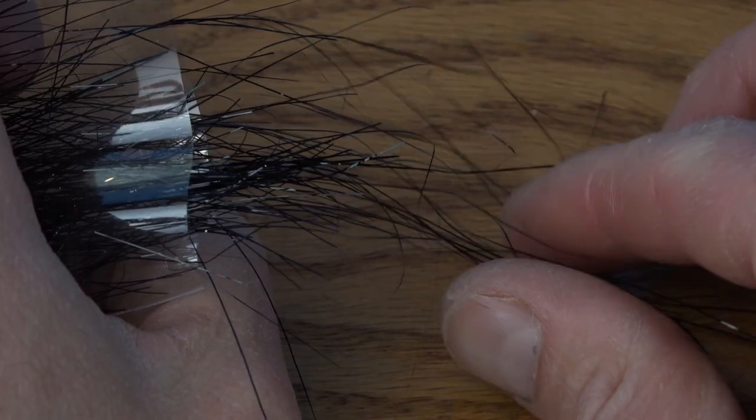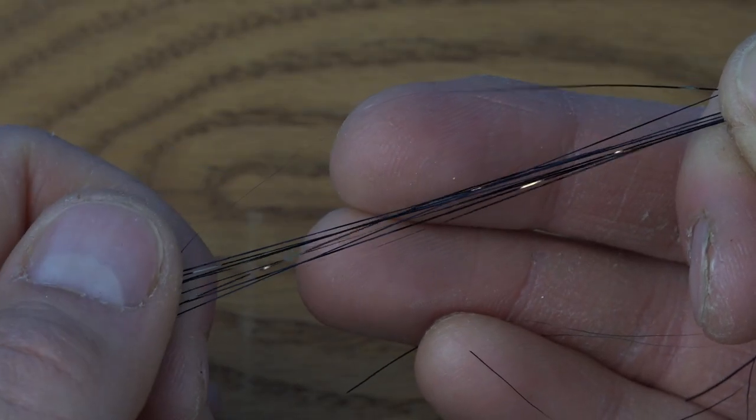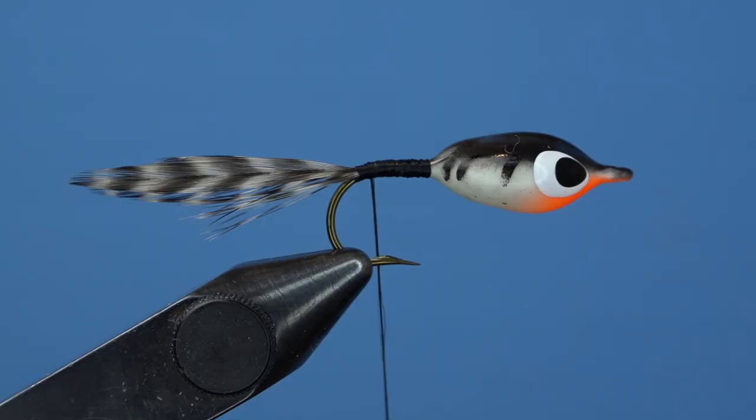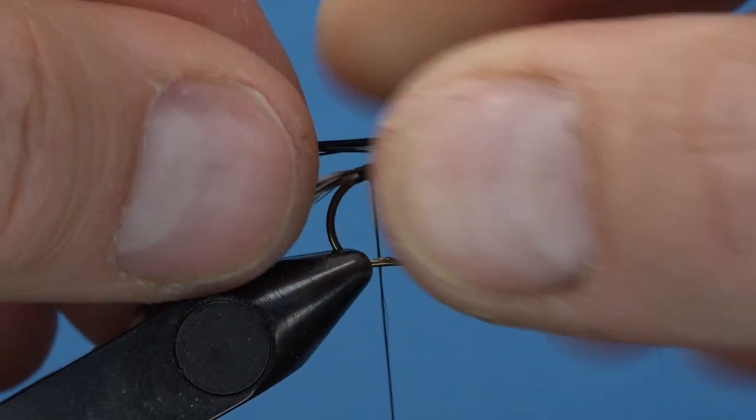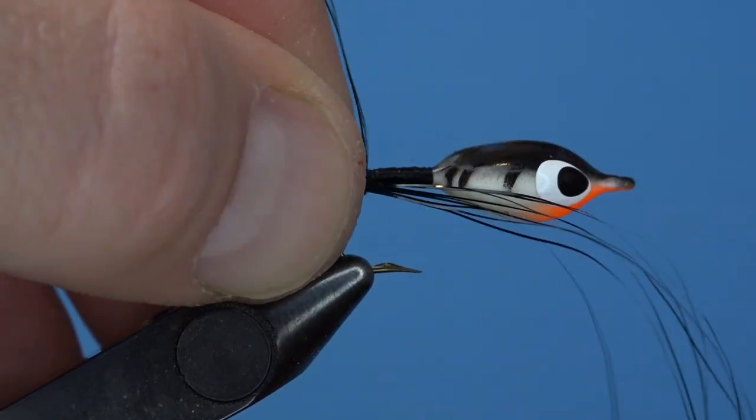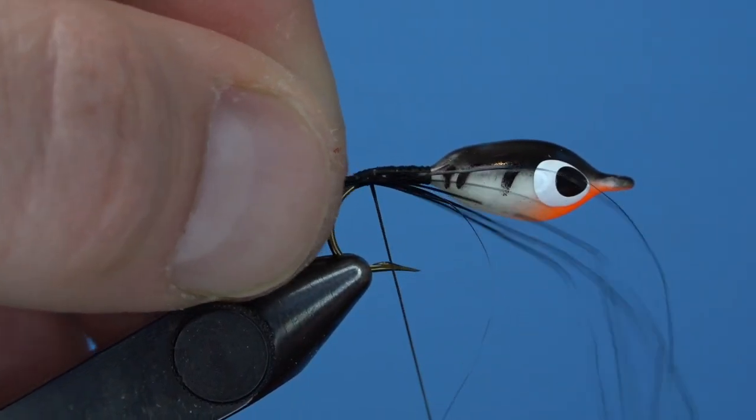For a bit of flash, I absolutely love saltwater angel hair. I use this in nymphs and dry flies, midge pupa, caddis larvae, anything I can really, to give it a bit more of a high-def look. And this stuff is absolutely awesome.